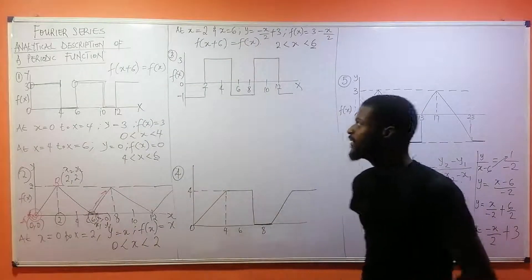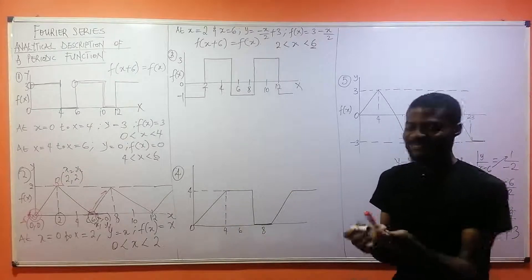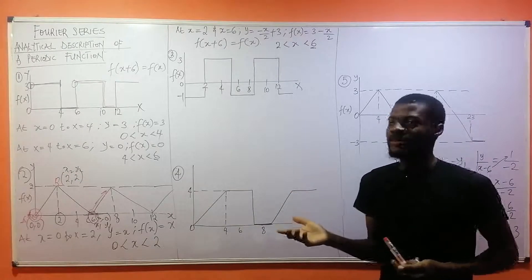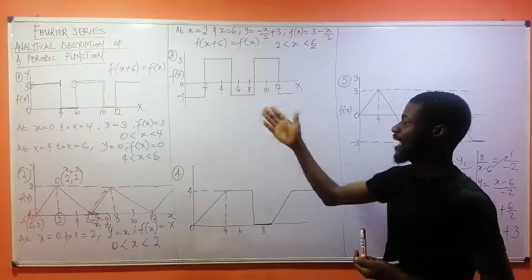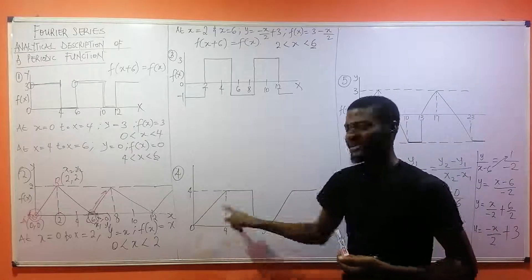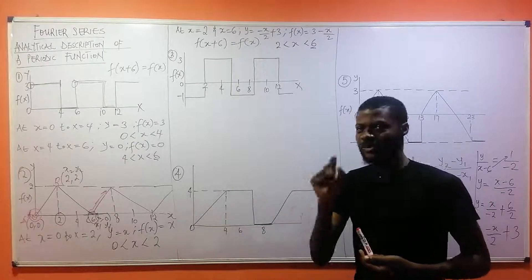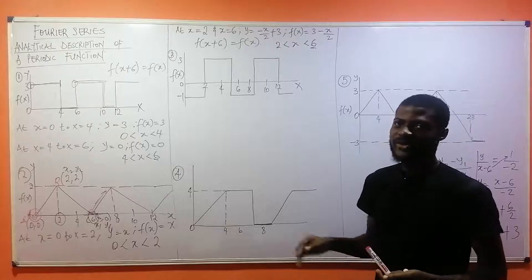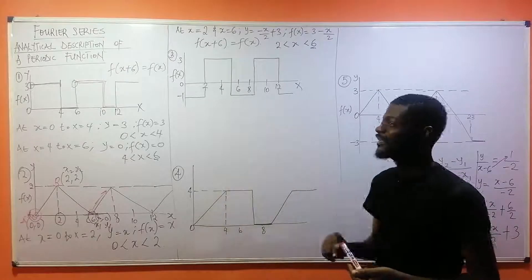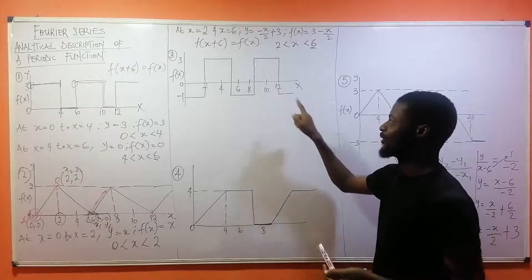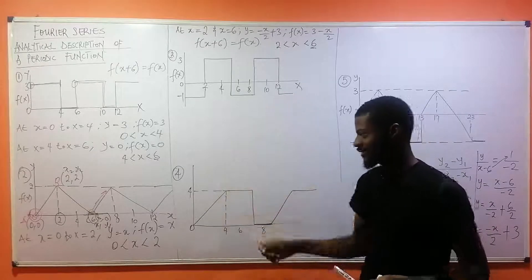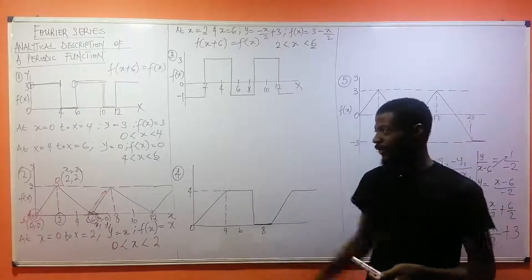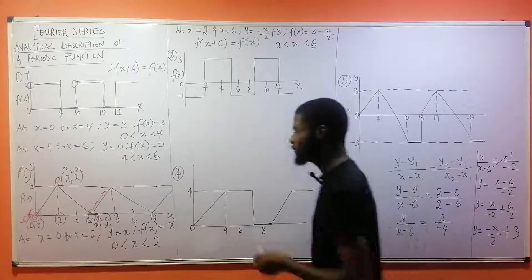Question three is very simple because we don't have slant lines — just horizontal lines. I'll leave it and solve it last. Let me move to question four.